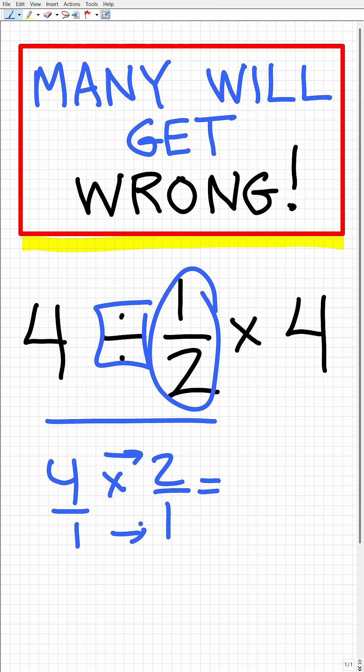And to multiply fractions, all you have to do is multiply the respective numerators and denominators. So 4 times 2 is 8. And 1 times 1 is, of course, 1.